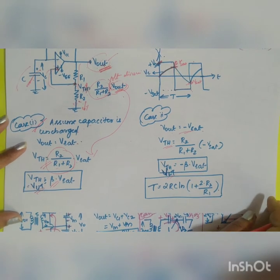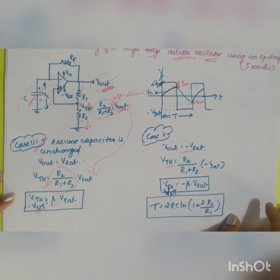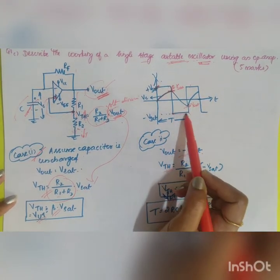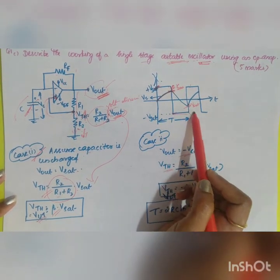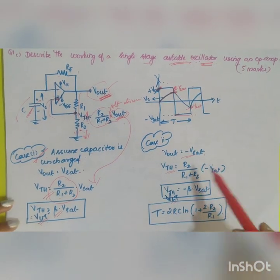This is your working principle of astable multivibrator, which does not have any stable state. It keeps on oscillating from positive to negative, plus Vsat to minus Vsat. The detailed explanation is given in the playlist.